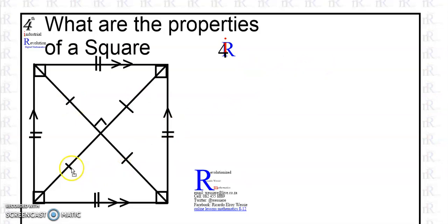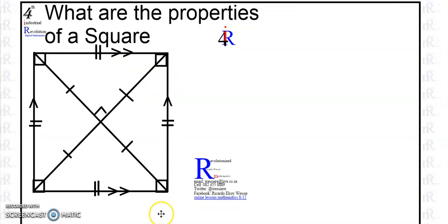So most of us will know these properties and we will neglect to say that the diagonals bisect the angles at 45 degrees.